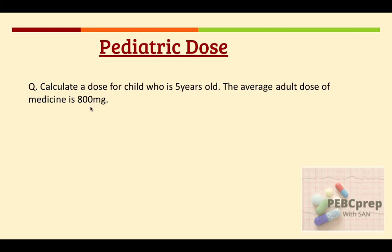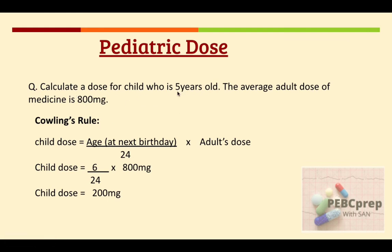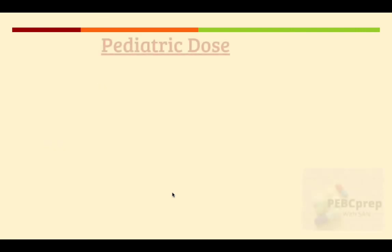Next question: calculate a dose for a child who is five years old; the average adult dose is 800 milligrams. We could use Young's rule since the child is over one year, but we'll use Cowling's rule as an example. Cowling's formula is: child dose equals age at next birthday multiplied by adult dose, divided by 24. The child is currently five, so we use six: (6 × 800) ÷ 24 = 200 milligrams.